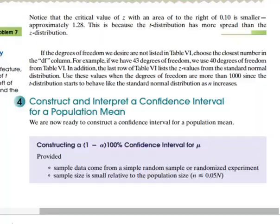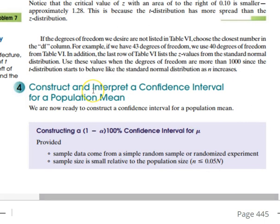If we look at the book here, it talks about constructing and interpreting a confidence interval for a population mean. It says some requirements need to be met.